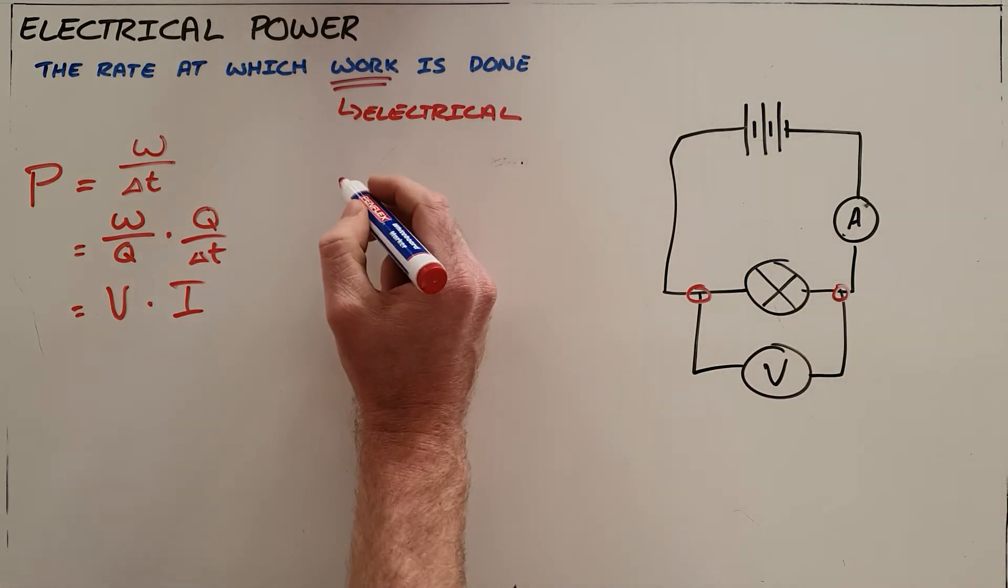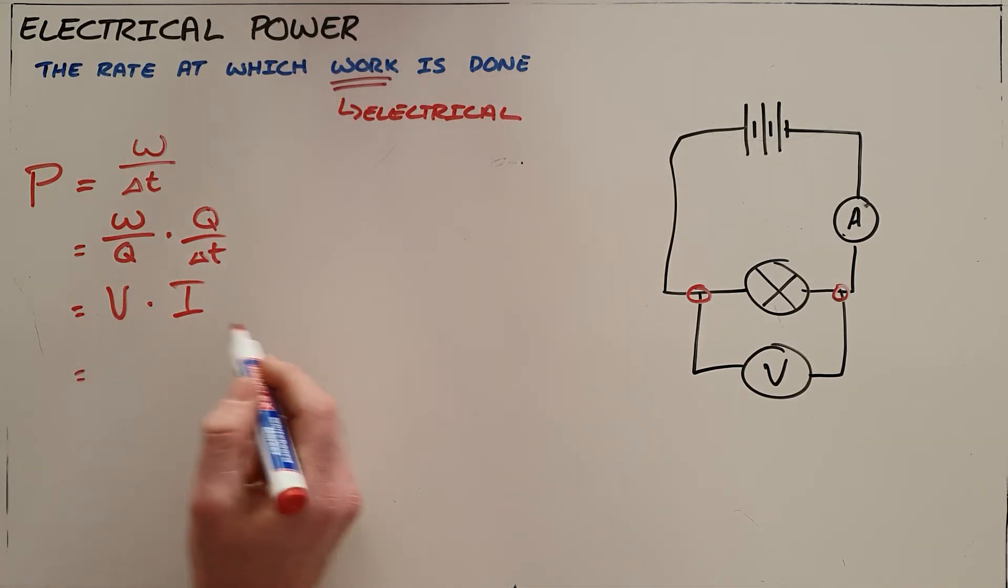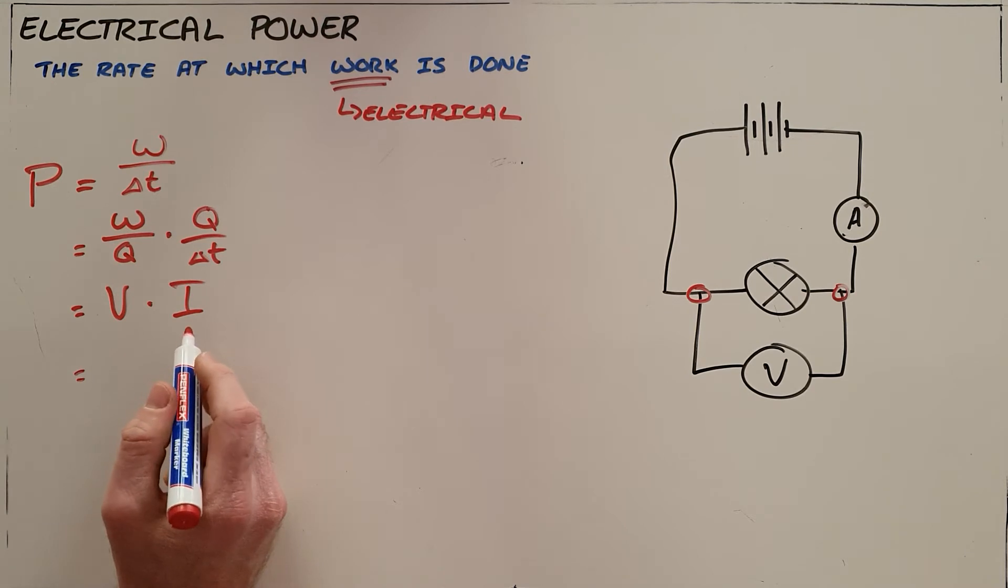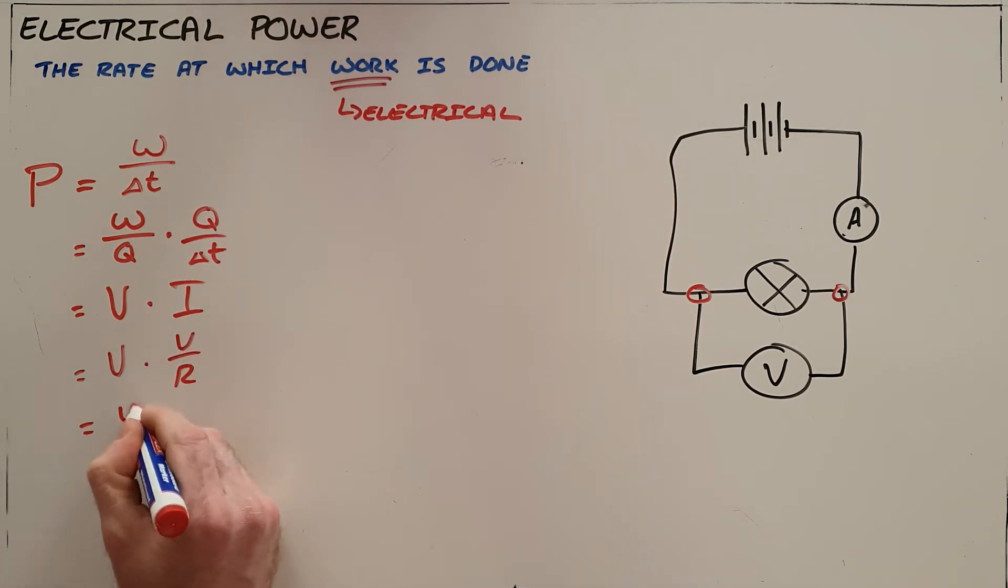Obviously using Ohm's law we can rewrite this. We know that current is equal to voltage divided by resistance, so we can substitute to find another formula for power: V squared over R.